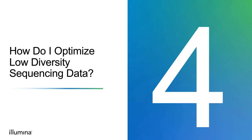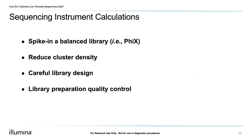Now that we understand what nucleotide diversity is, how to determine the base diversity of our libraries using run metrics, and how base diversity impacts instrument sequencing run performance, let's take a look at how we can optimize our sequencing runs to handle low diversity libraries. We have four main strategies: spiking in a balanced and diverse library, reducing the cluster density, careful library design, and proper library preparation quality control.